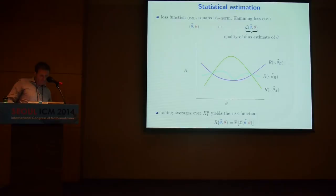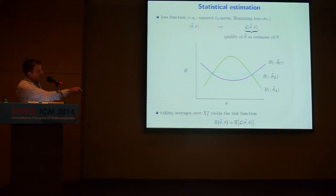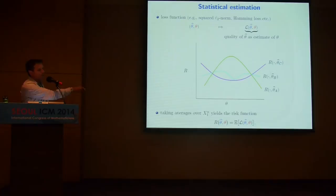That expectation defines the risk function, a central object here. For a given estimator, if the true parameter were theta, you applied it many times over many different samples, how well would you do on average? If I fix the estimator and fix some theta hat, as the thing I'm trying to estimate varies over the space, I get a different number for each possible choice of the true value. So for every estimator, you have a whole function — a risk function.